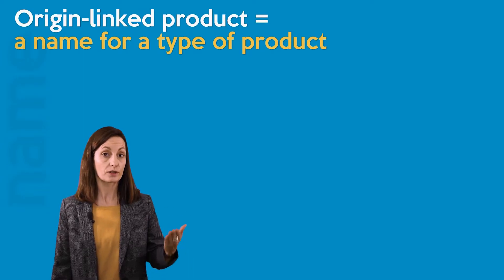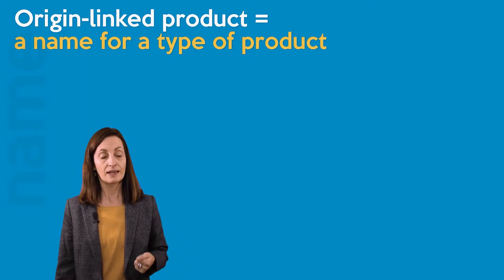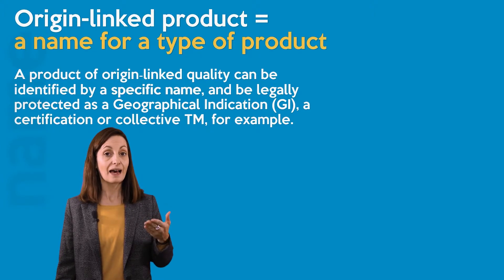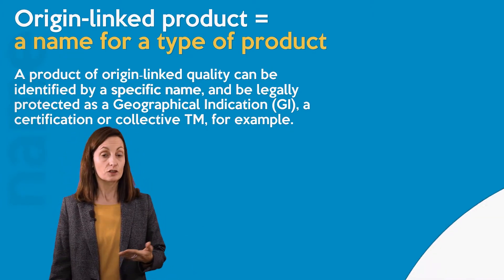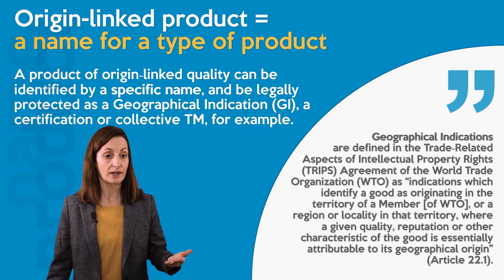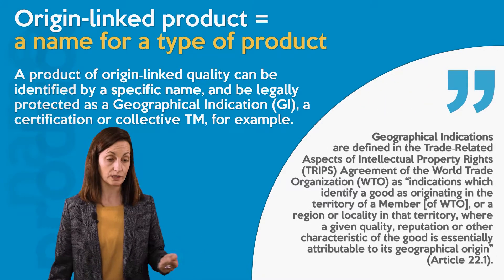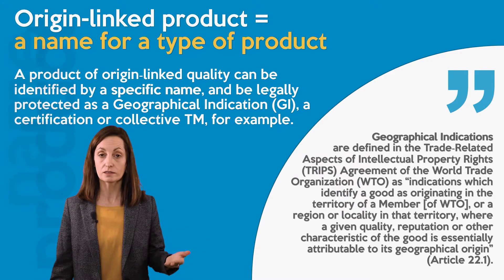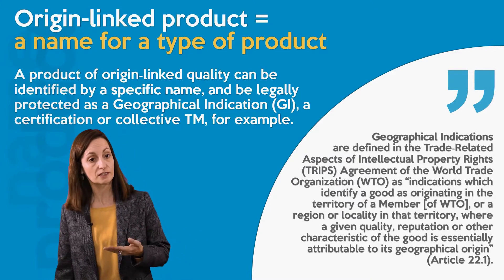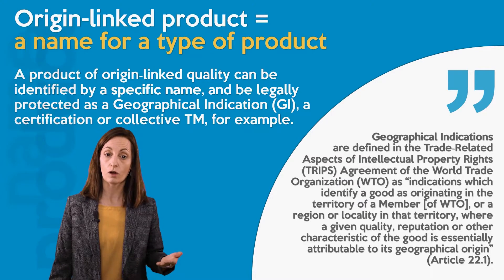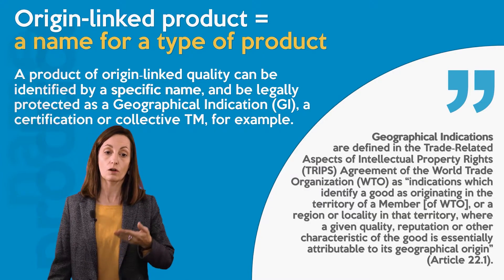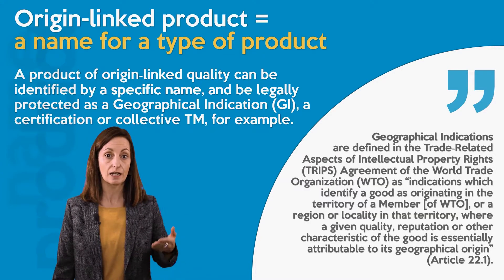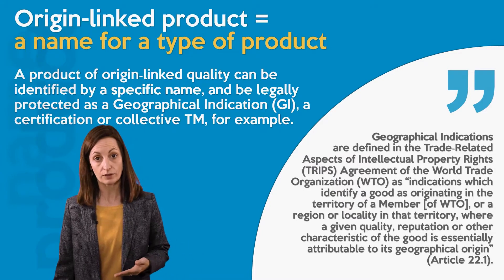An origin-linked product is identified by a specific name referred to as a geographical indication or collective trademark. Geographical indications are defined in the TRIPS agreement of the World Trade Organization as indications which identify a good as originating in the territory of a member, or a region or locality in that territory, where a given quality, reputation, or other characteristics of the good is essentially attributable to its geographical origin.